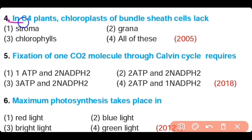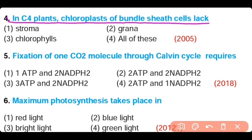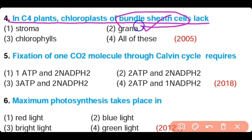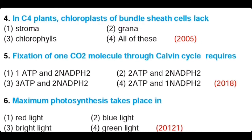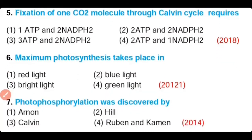Question number 4. In C4 plants, the chloroplasts of bundle sheath cells lack: stroma, grana, chlorophylls, or all of these. The correct answer is option 2. Grana is absent in bundle sheath cells of chloroplasts in C4 plants.